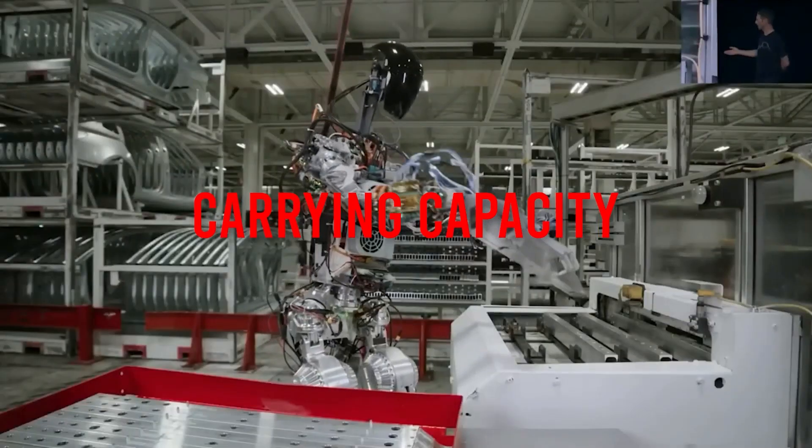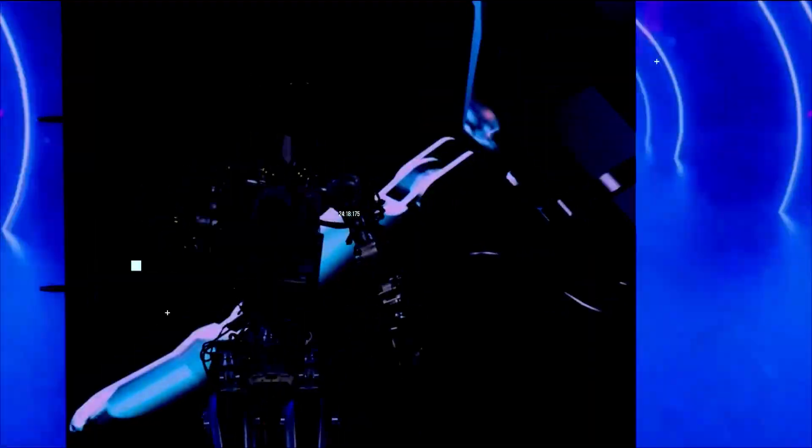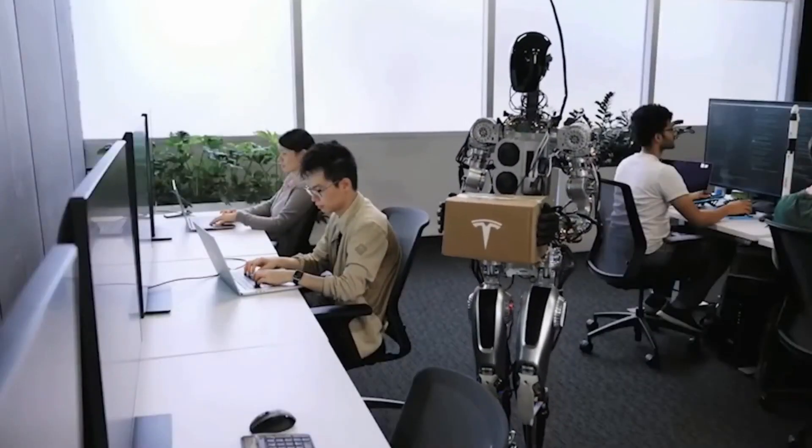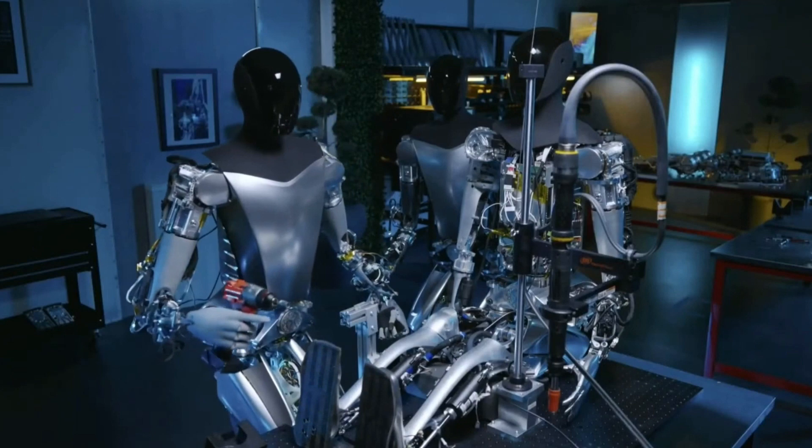Carrying Capacity: Optimus can carry 20 pounds per hand, likely more in different configurations. It can also lift objects from the ground up to eye level, squeeze, grip, and lift objects, use a drill, screwdriver, push and pull objects, and turn with an object.